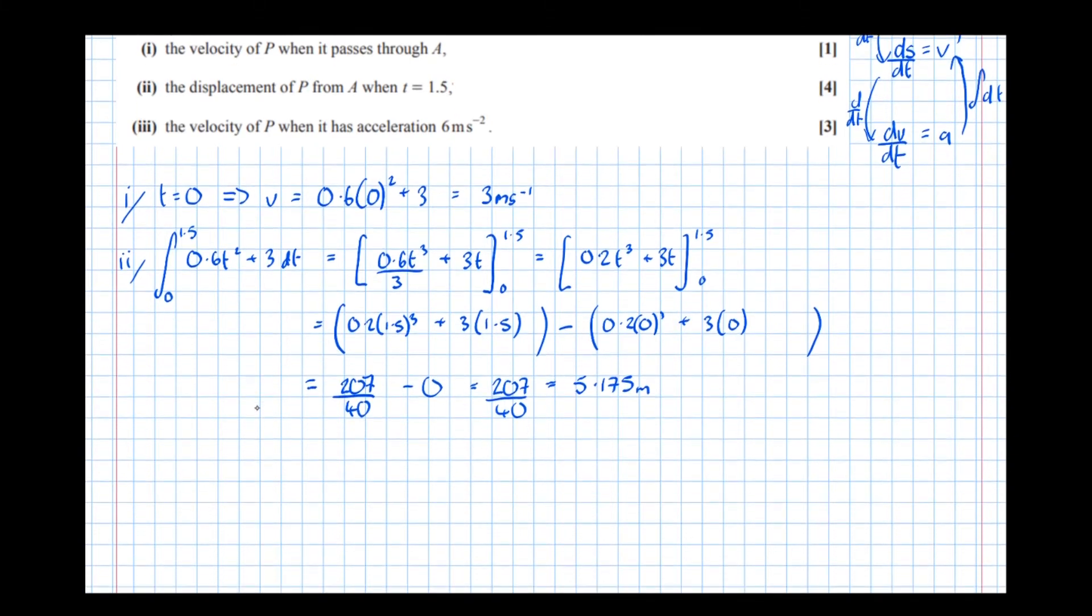Then part three: the velocity of P when it has acceleration 6. So we want to find acceleration now, so we've got that v equals 0.6 t squared plus 3. So if we differentiate that to get acceleration.